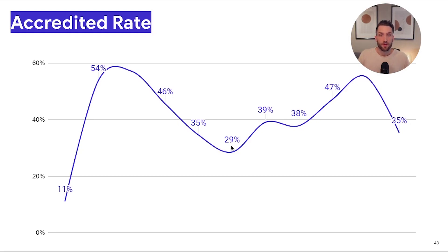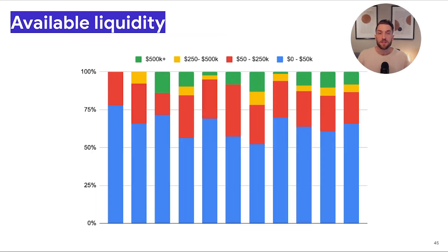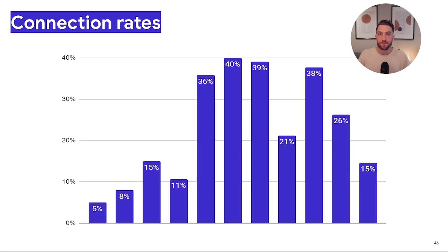Here's the accreditation rate over the period we were advertising, and the cost per accredited lead averaging about $40. The available liquidity chart shows roughly 60% to 75% of all prospects engaging with our lead forms were looking to invest $0 to $50,000. Some investors going all the way through were in higher buckets, but it's important to understand the demographic and audience interacting with this content. As for connection rates, we averaged about 20%, but as the program went on and we figured out the best times of day to reach out and the right call sequence, we were able to get that rate higher — though overall we were connecting with less than half of qualified prospects.